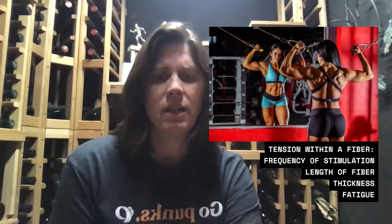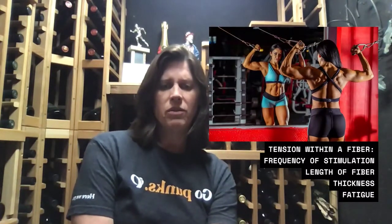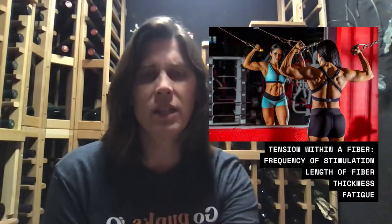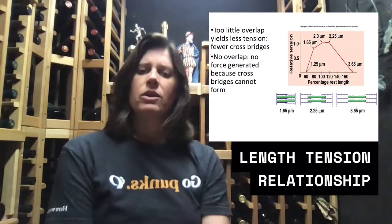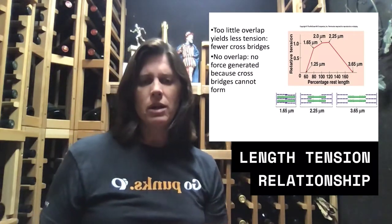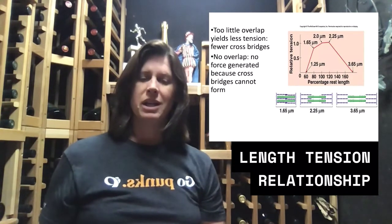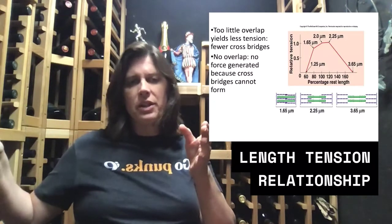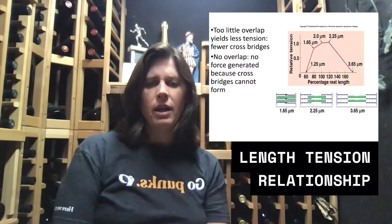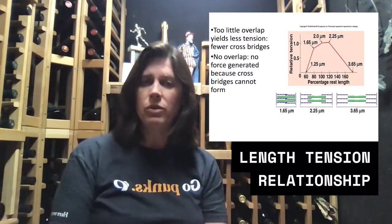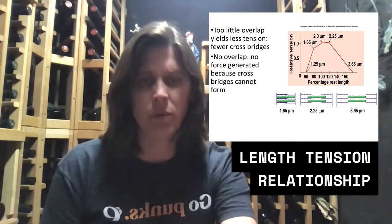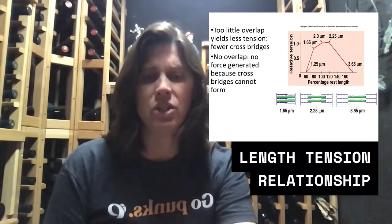Now let's look at the length of a fiber — the length-tension relationship. The length of your muscle fiber can vary the tension produced inside it, and it has to do with cross-bridging. Looking at a single sarcomere, the same principles apply to all sarcomeres down the length of the muscle fiber.